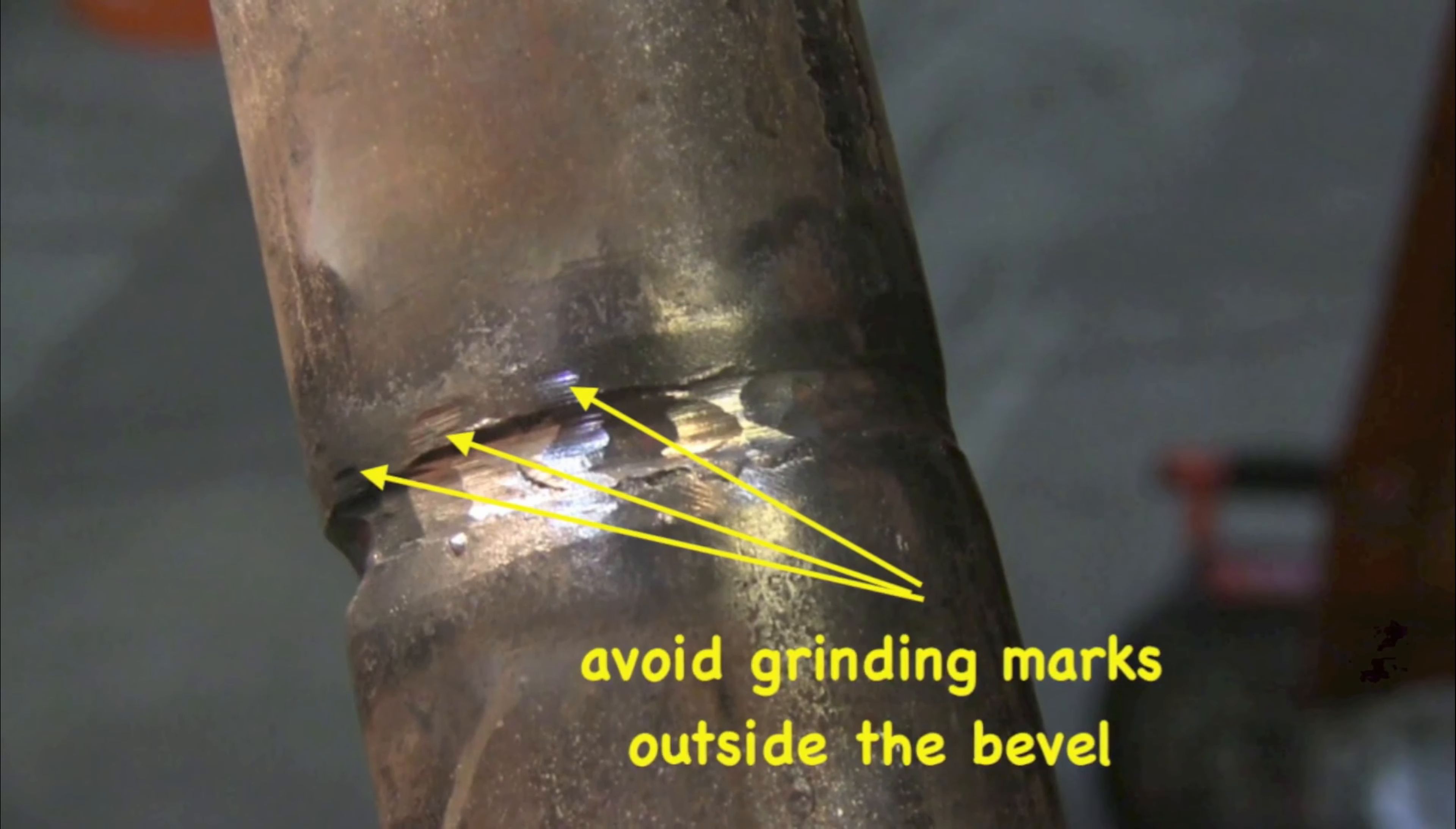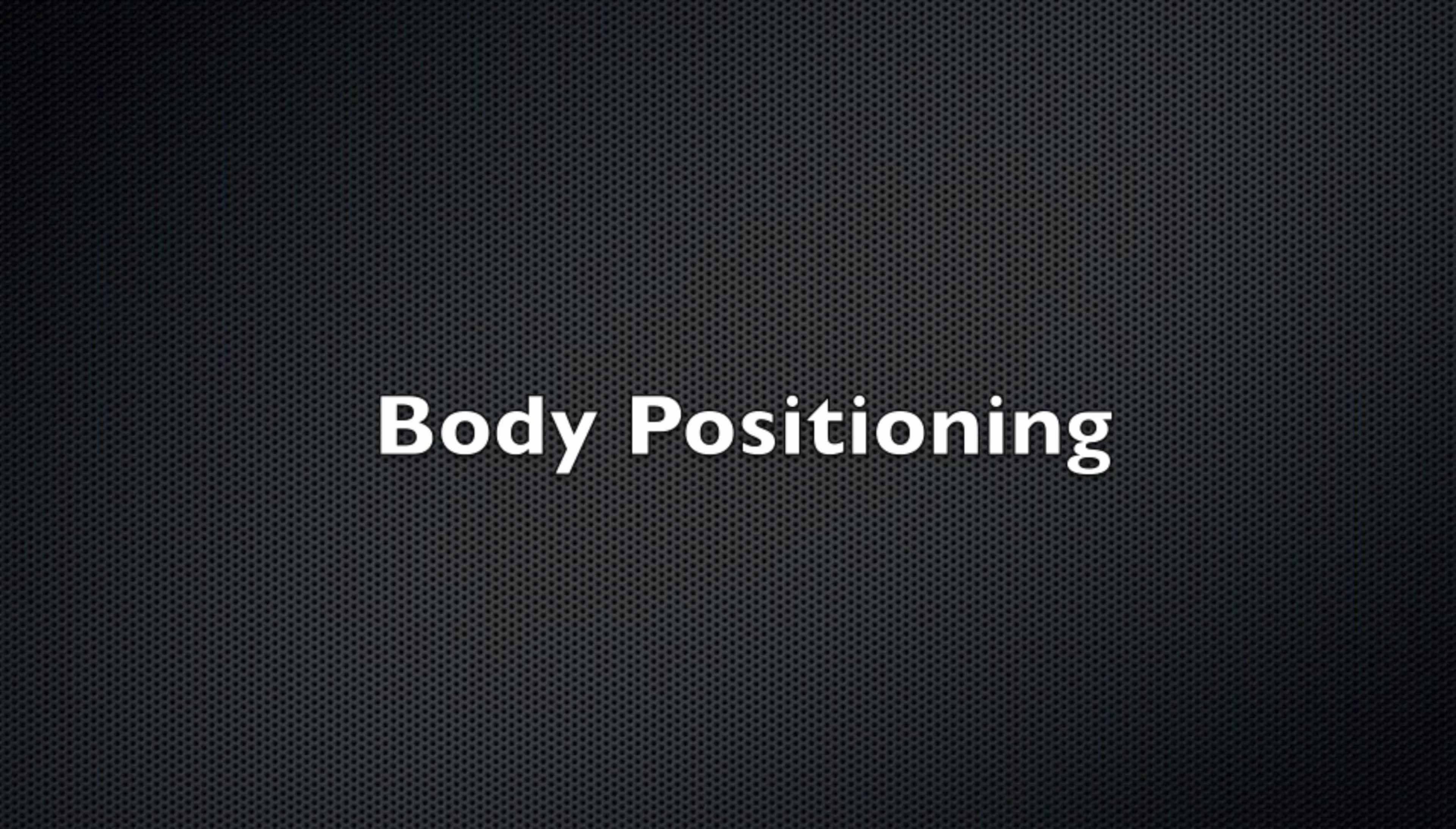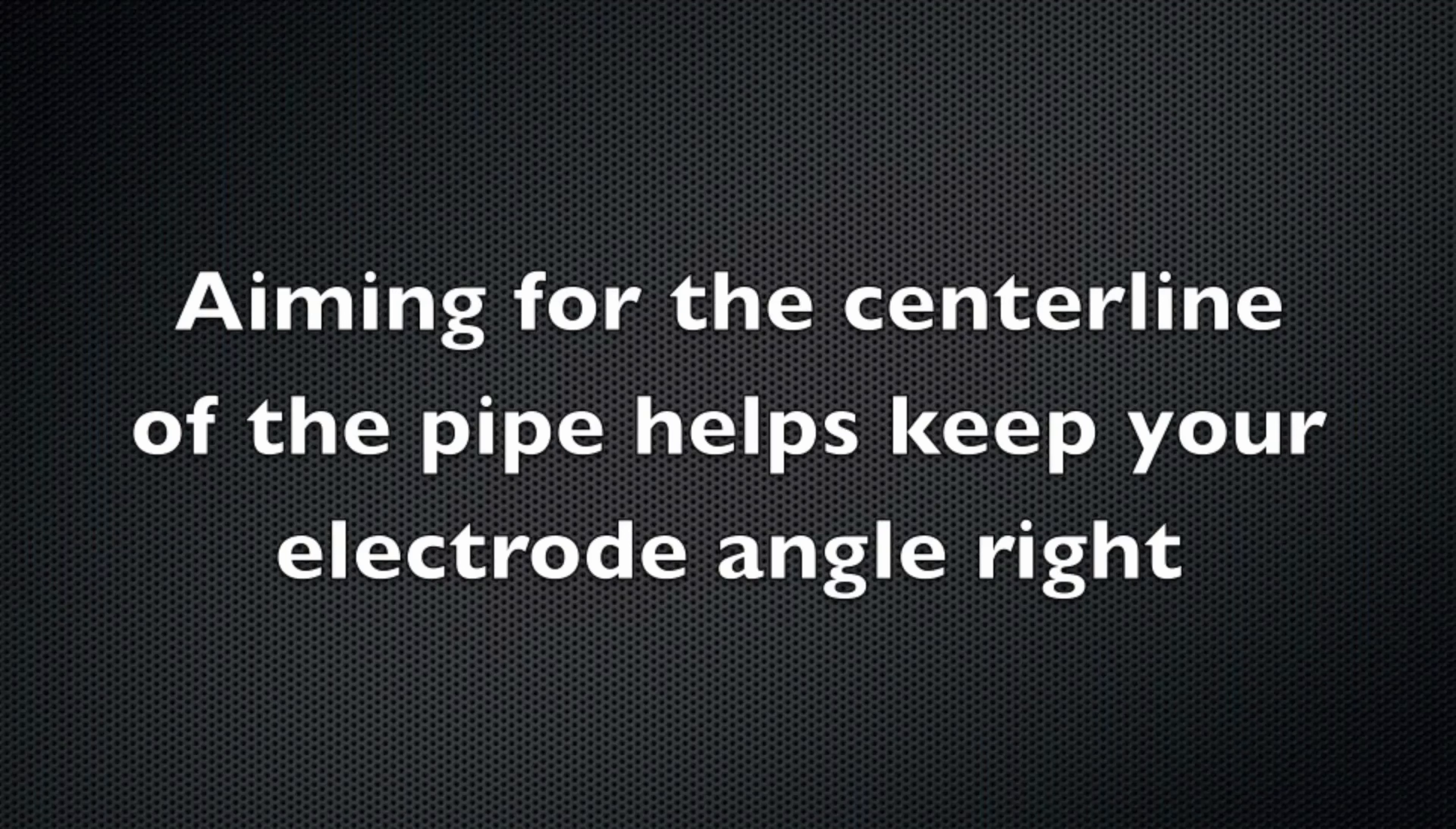But I noticed this when editing - body positioning. It's not such a huge deal on the 6010 root because you're only welding a quarter of it at a time, so you don't really have to reposition. Aiming for the center line of the pipe I have found kind of helps you keep your electrode angle right in your mind.